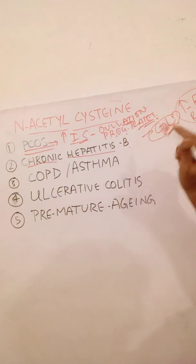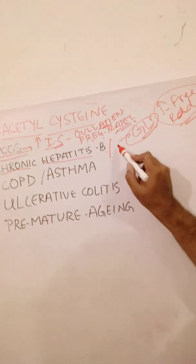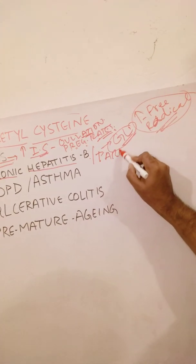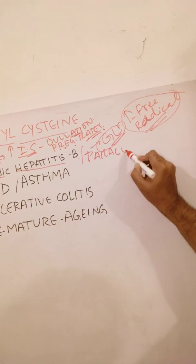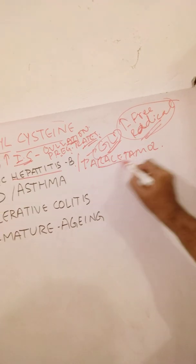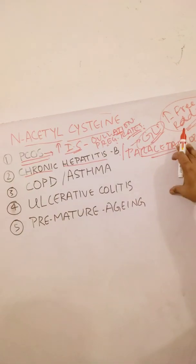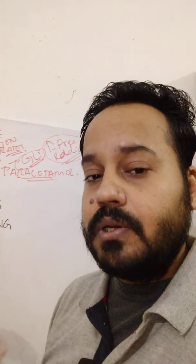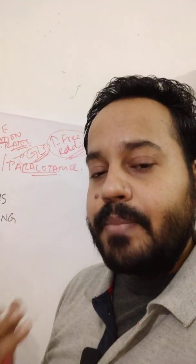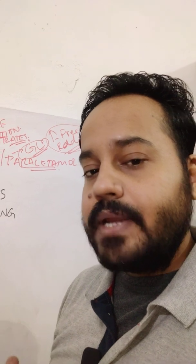N-acetylcysteine is also used when you have paracetamol poisoning, because paracetamol damages your liver. N-acetylcysteine exerts a protective effect on your liver by increasing your body's capacity to fight against free radicals.